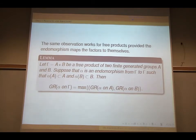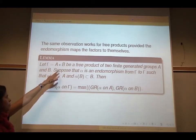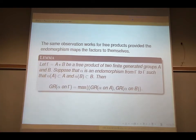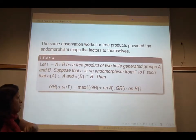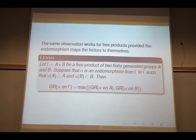Similarly, you can show that when you have the free product of two finitely generated groups A and B, the growth rate of alpha will be the maximum of the growth rate of alpha on A and the growth rate of alpha on B.